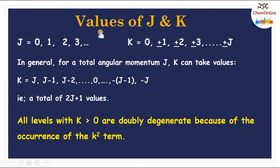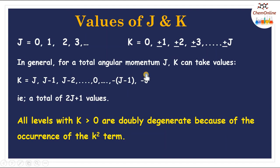J can take values 0, 1, 2, 3, etc. K can take values 0, ±1, ±2, ±3, etc., up to ±J. In general, for a total angular momentum J, K can take values J, J−1, J−2, ..., 0, ..., −J+1, −J — that is, a total of 2J+1 values for a given J.